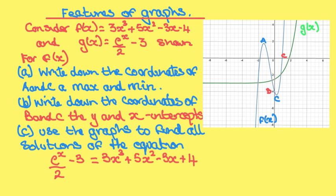In part a, write down the coordinates of A and C, which are the maximum and the minimum of f(x). Part b, write down the coordinates of B and D, the y and x intercepts of the graph f(x). And in part c, use the graphs to find all solutions of the equation e^(x/2) - 3 = 3x³ + 5x² - 3x + 4. In other words, we find the points where the two graphs f(x) and g(x) intercept.